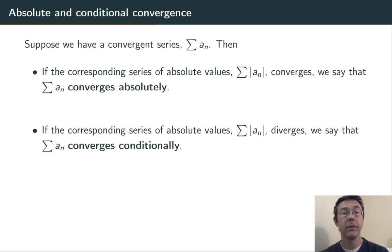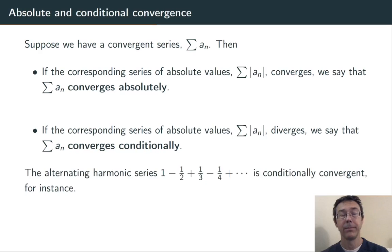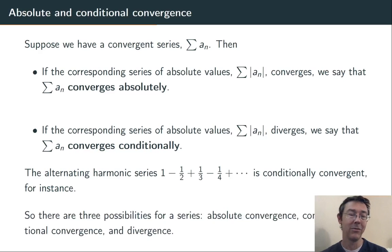On the other hand, the sum of the absolute values could diverge, in which case the original series, sum of a_n, converges conditionally. Again, the alternating harmonic series is your prototypical example. It's conditionally convergent. It converges, but if you make all those minuses pluses, it's going to diverge.